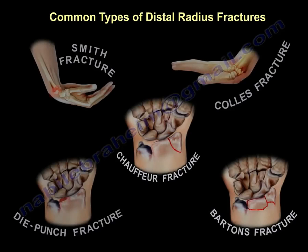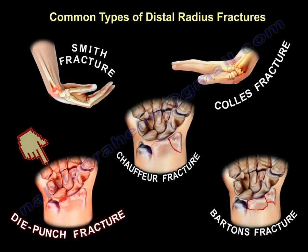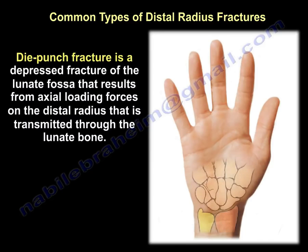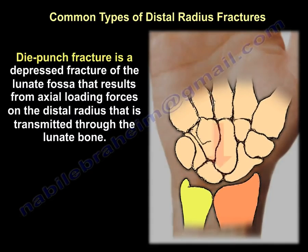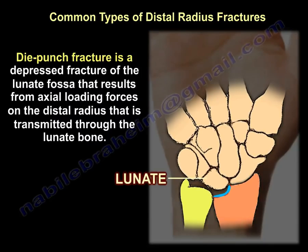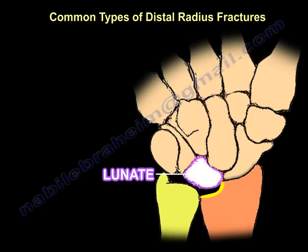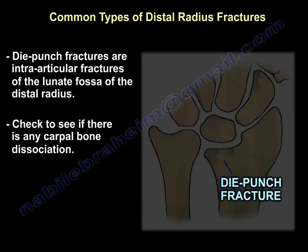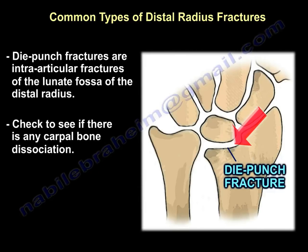The other type is a die-punch fracture. It is a depressed fracture of the lunate fossa from an axial load transmitted through the lunate bone. These are intra-articular fractures of the lunate fossa. Always check to see if there is any associated carpal bone dissociation.